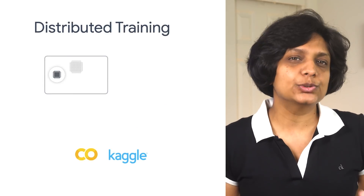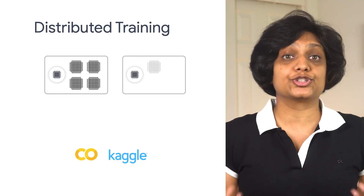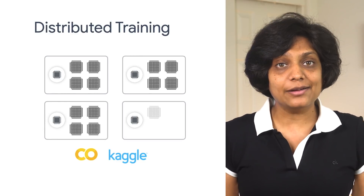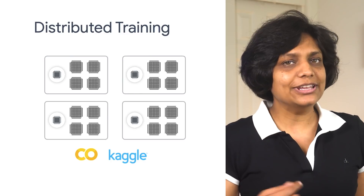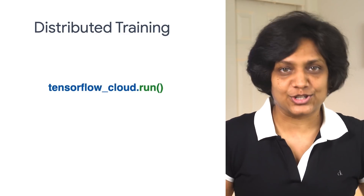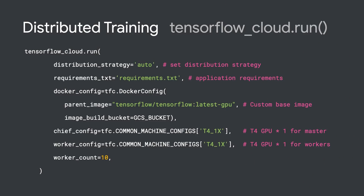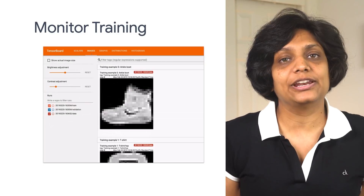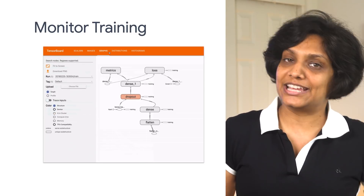The first big use case of TensorFlow Cloud is distributed training. You can develop and test the models in Colab or Kaggle kernels. To train the model at scale, all you do is use the run function. You can define the parameters in the run function to define distribution strategies, requirements, custom Docker image, master and worker configs, and you can even monitor training from Colab using TensorBoard.